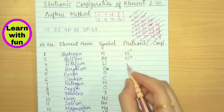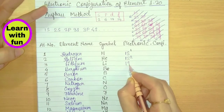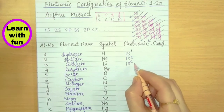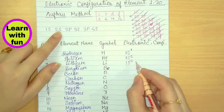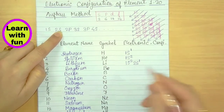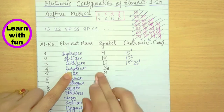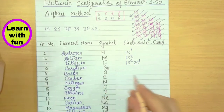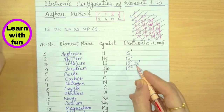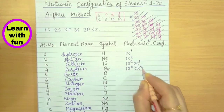Lithium has 3 electrons. The formula starts with 1S2, which fills 2 electrons. 1 electron is left, and that goes into the 2S subshell, giving 1S2 2S1. Beryllium has 4 electrons. 1S2 fills 2, then 2 are left, so those go into 2S2. The configuration for beryllium is 1S2 2S2.